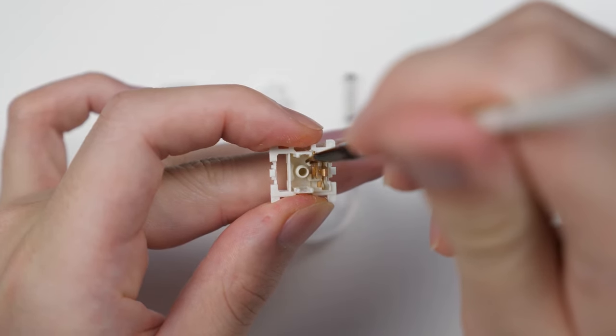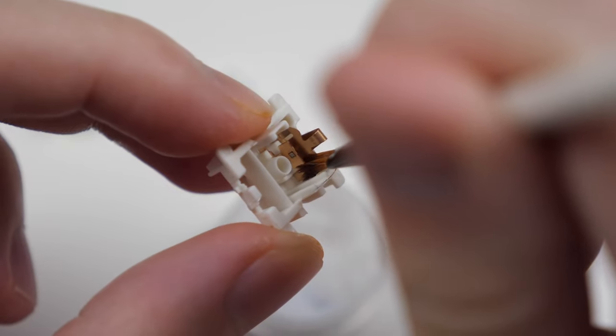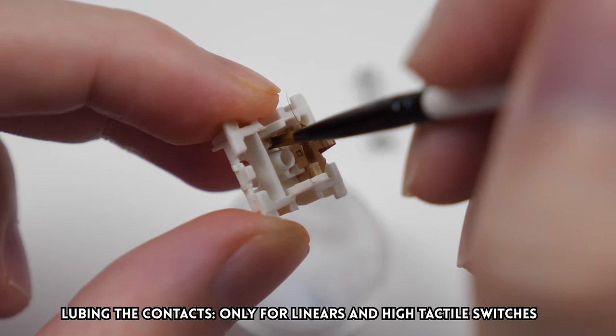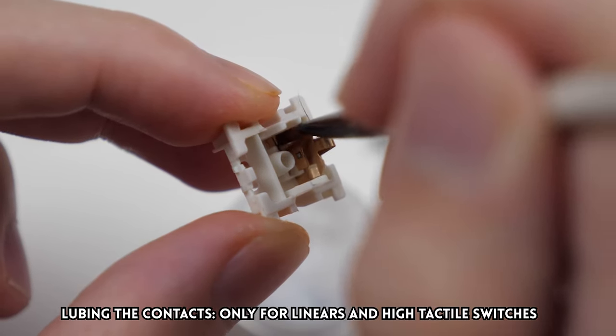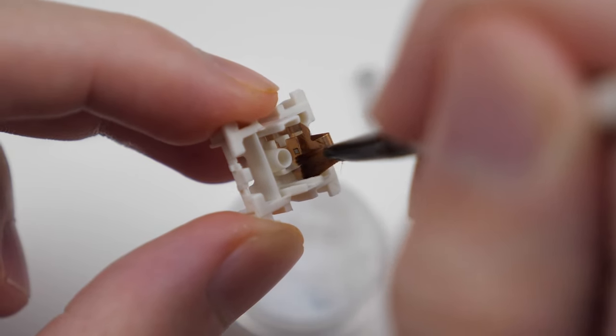If you want your linear switches even smoother, you can also apply a small amount of lube on the contact flaps, which I would definitely recommend. Only lube these contacts for tactile switches if you have preferably 67g springs or higher. If you're using light tactile switches, do not do this step.